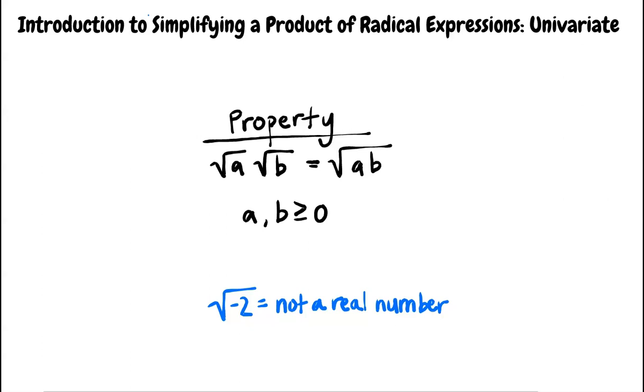Also, a and b can include both numbers and variables. This video will focus on examples containing one variable.